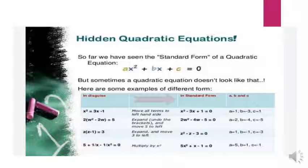Moving 3x - 1 to the left side gives us the standard form: x² - 3x + 1 = 0, where a = 1, b = -3, and c = 1.